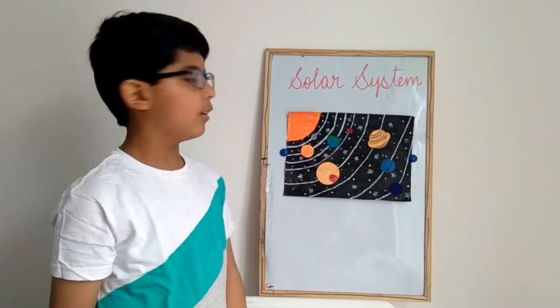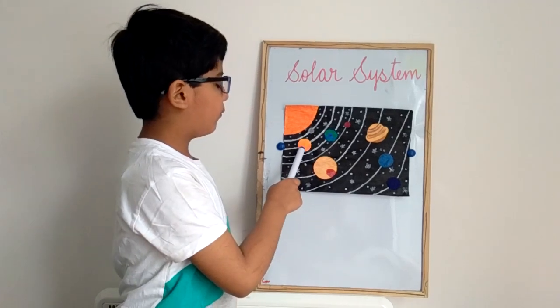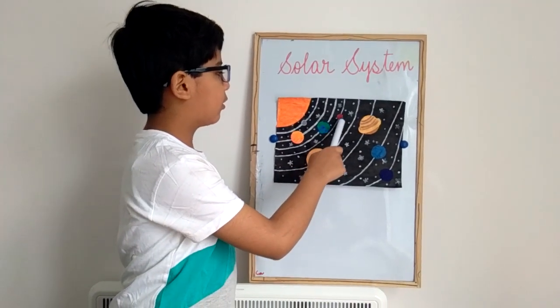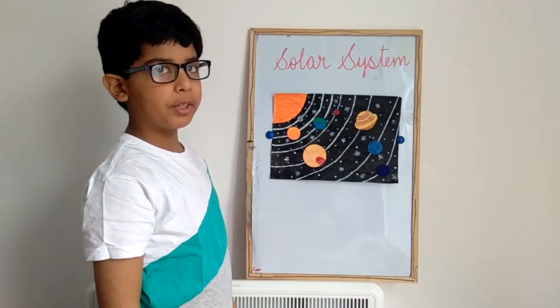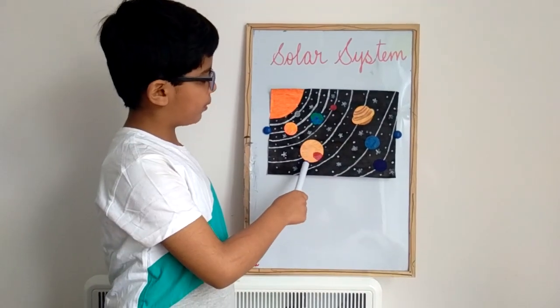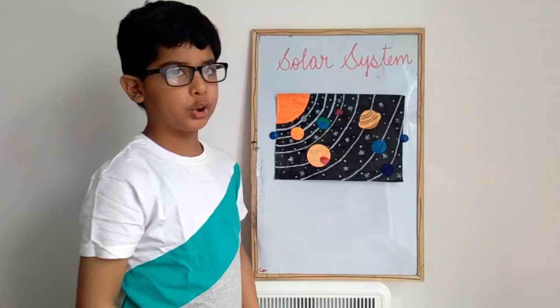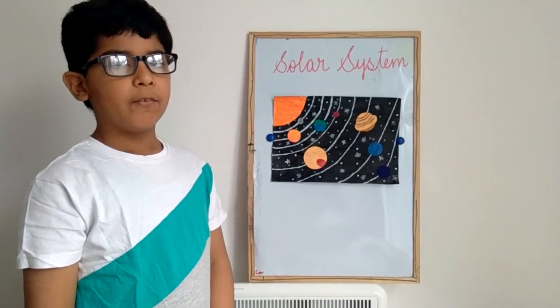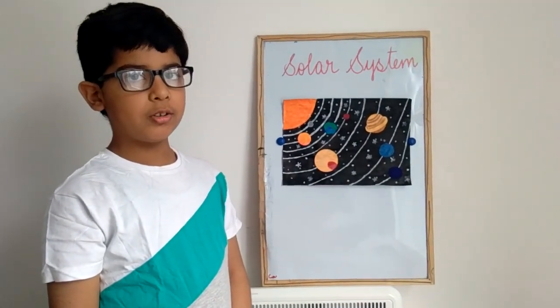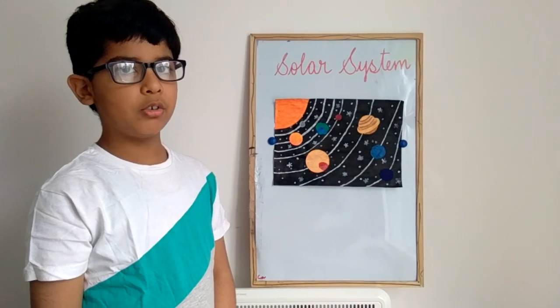The inner planets are Mercury, Venus, Earth, and Mars. The outer planets are Jupiter, Saturn, Uranus, and Neptune. In this video, we are going to only talk about the inner and the outer planets.